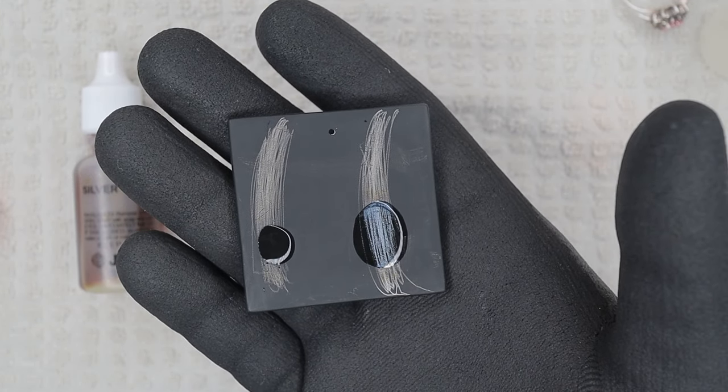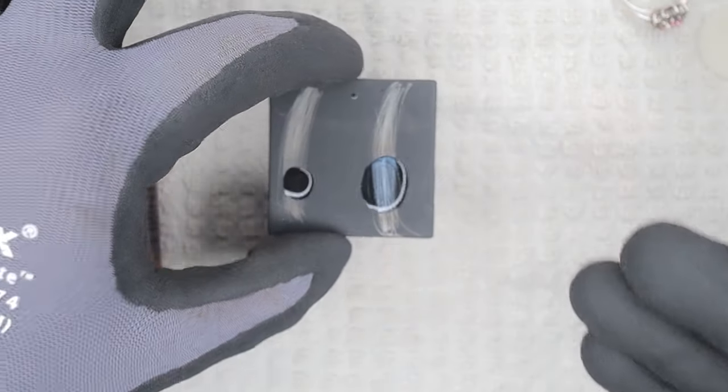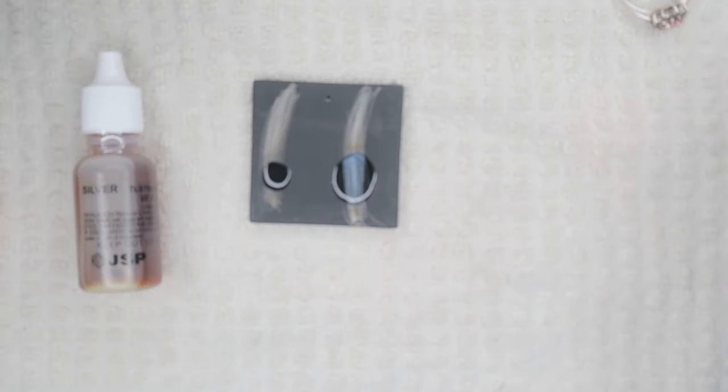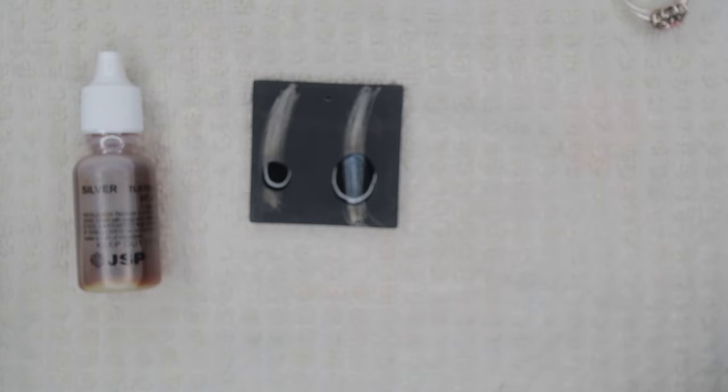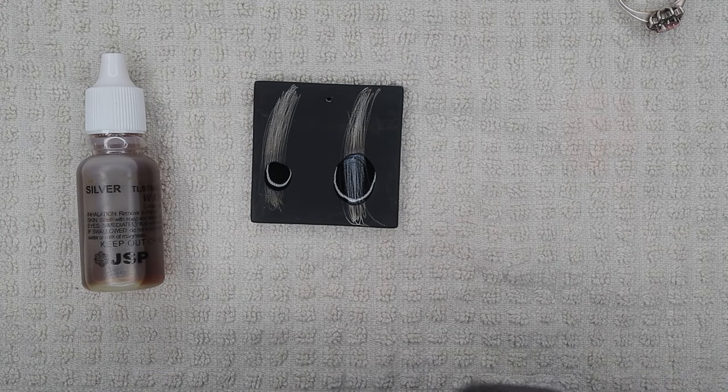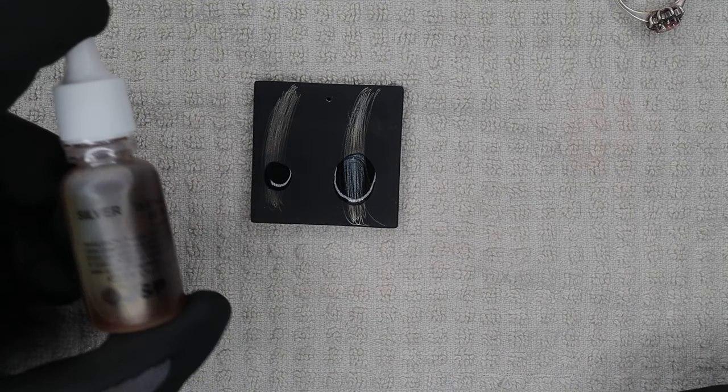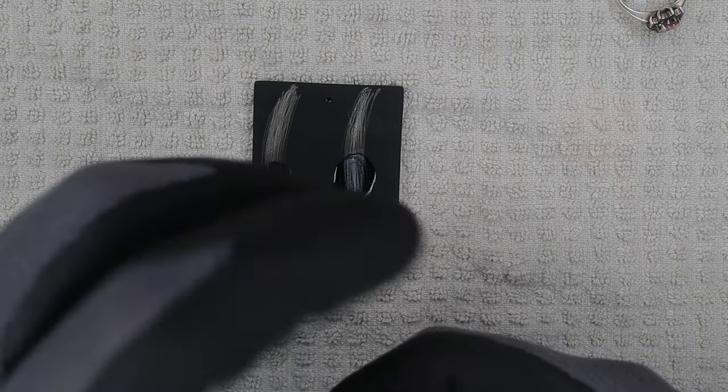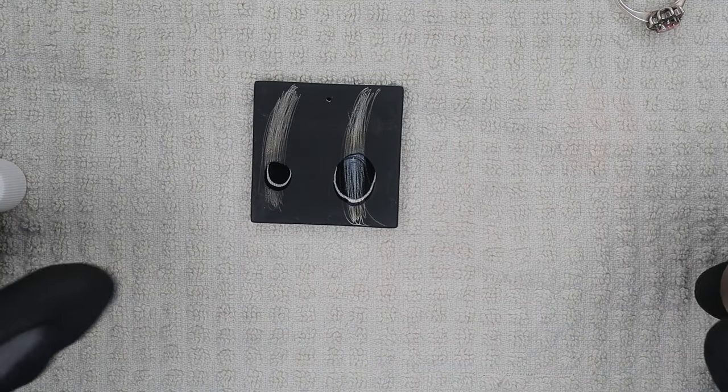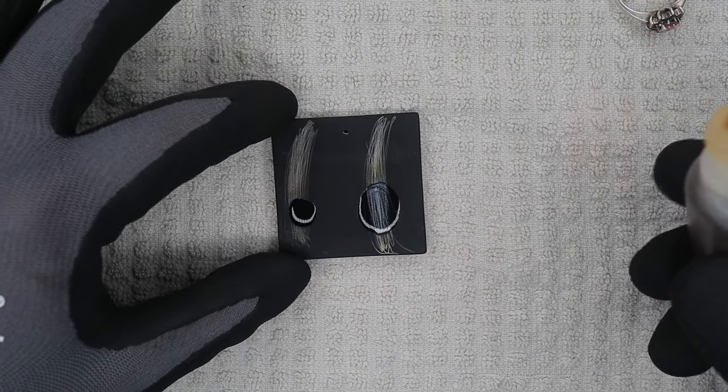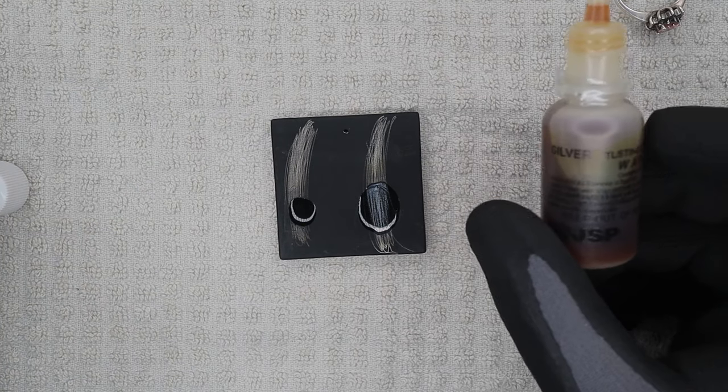I'm going to take it a step further and show you why I like the 18 karat gold method, or acid, better than the silver, especially when using a black scratch block like the scratch pad. What we want to see when we put the silver acid on is that the acid turns a red tint. If it stays yellow, it is not silver.